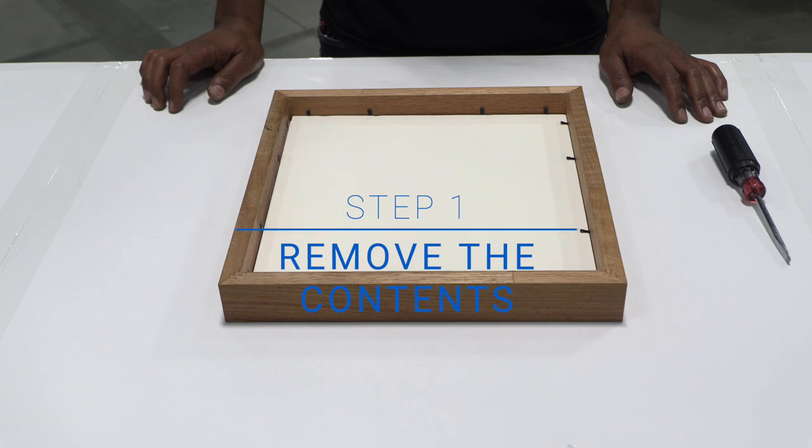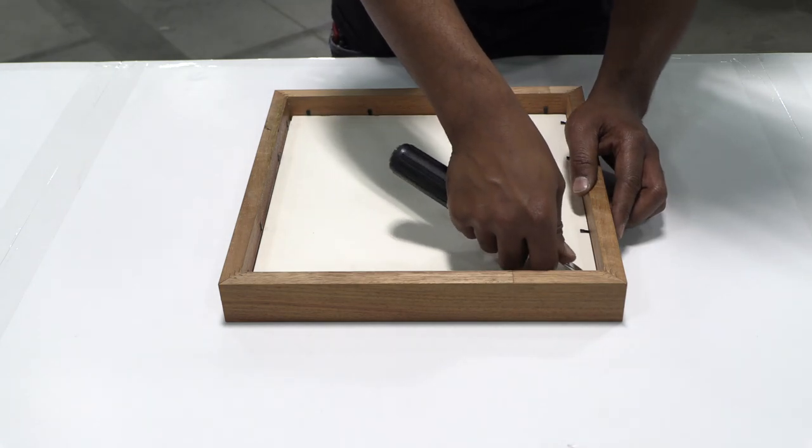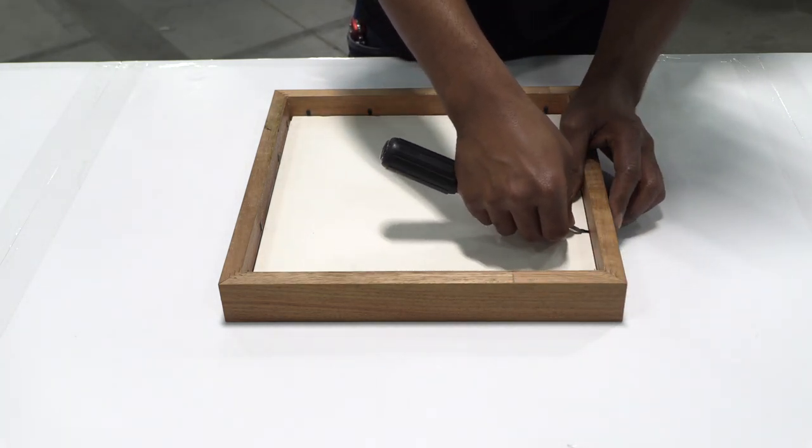Step one, removing the contents. If you have a wood frame, then pry all the metal points on the back of the picture frame up and remove the contents. This can easily be done with a flathead screwdriver.